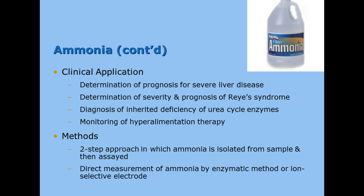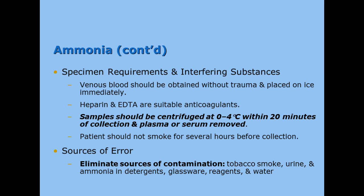Specimen requirements for ammonia are very, very important. Venous blood should be obtained and put on ice immediately. You can use a green top or a purple top tube. We need to centrifuge the specimen quickly, within 20 minutes, keeping it cold and taking the plasma off. Over time, cells start to die and release ammonia, resulting in a falsely higher ammonia than what the patient really has. Heavy smoking, urine contamination in the sample, ammonia in detergents used to wash glassware, and reagents can all be sources of error.